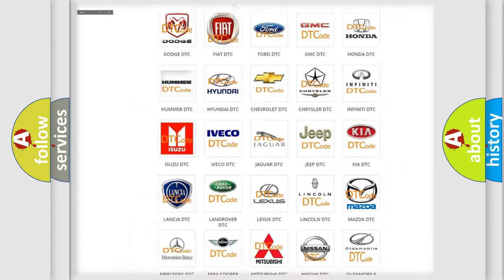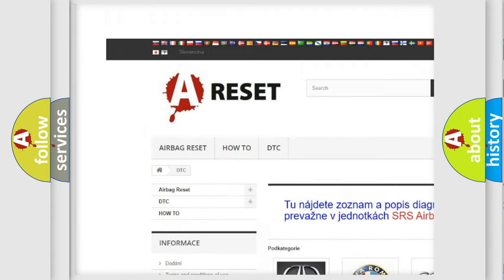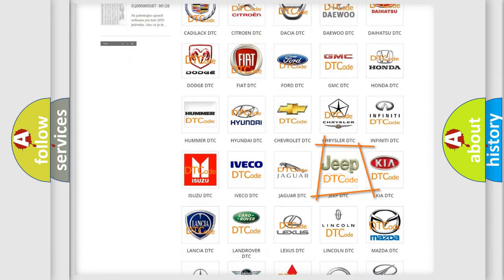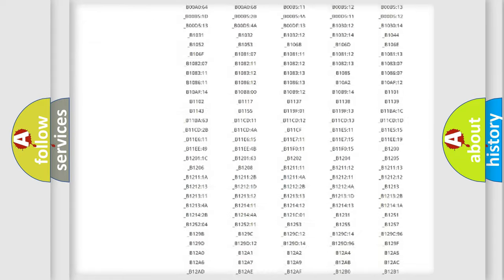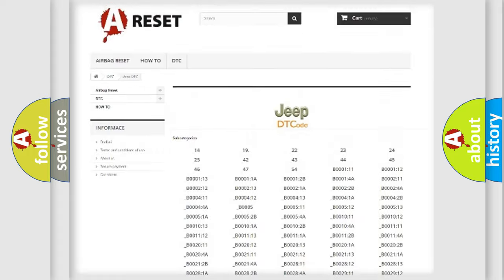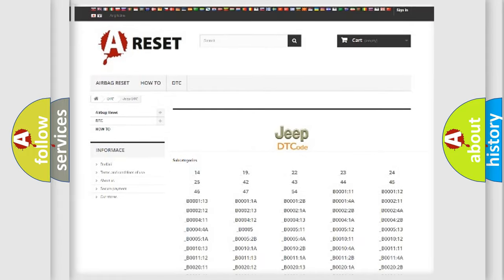Our website airbagreset.sk produces useful videos for you. You do not have to go through the OBD2 protocol anymore to know how to troubleshoot any car breakdown. You will find all the diagnostic codes that can be diagnosed in Jeep vehicles, and many other useful things.